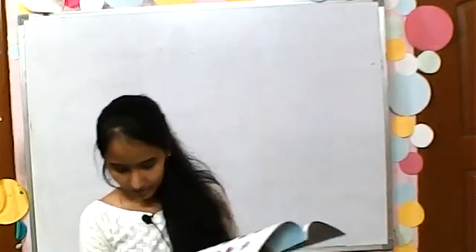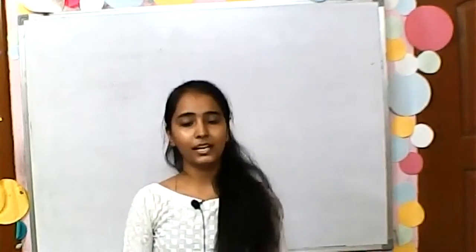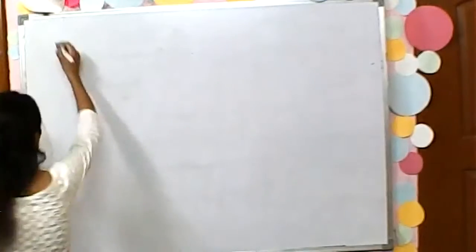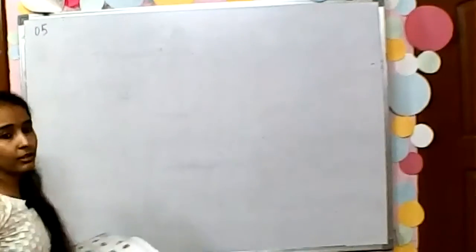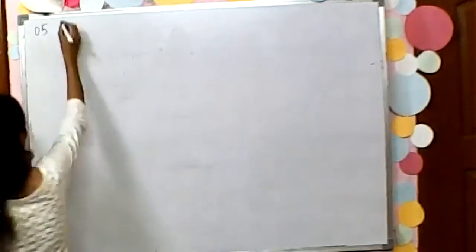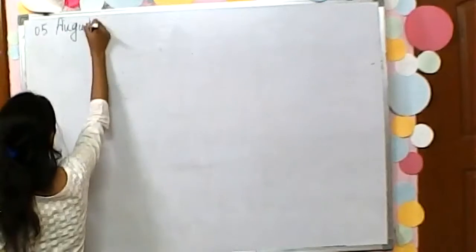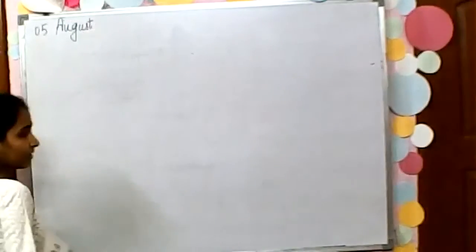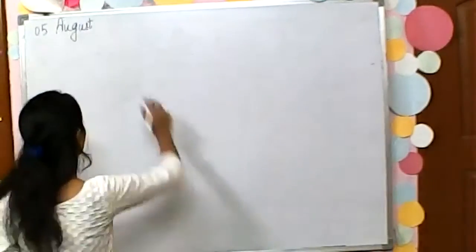What is the date today? Students, what is the date today? You can tell the date today. Five. Which month is going on? August. Which year is going on? August - which year? Which year is going on? 2021.